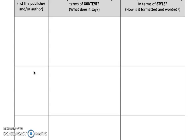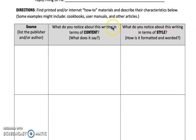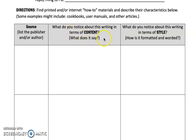You need to pick four sources — one, two, three, four — and notice what about this writing works in terms of content: meaning, what does it say? And then you need to write what you notice about this writing in terms of style: how is it formatted and worded?